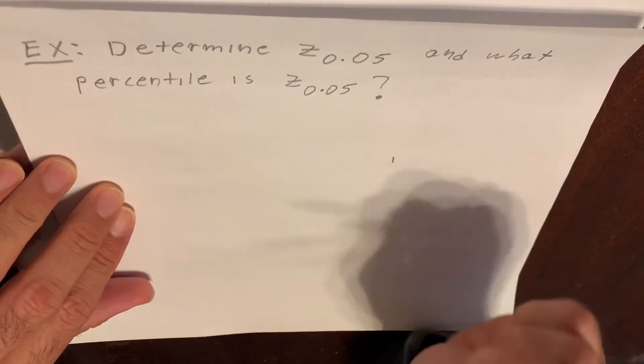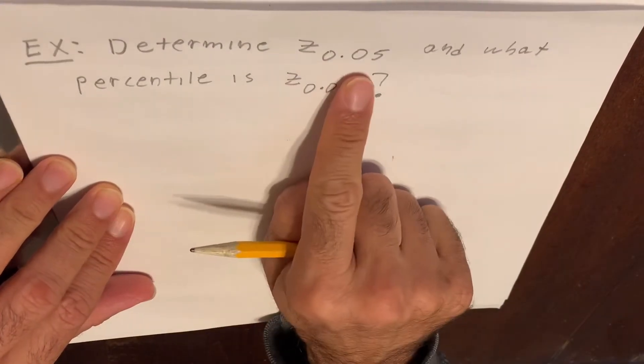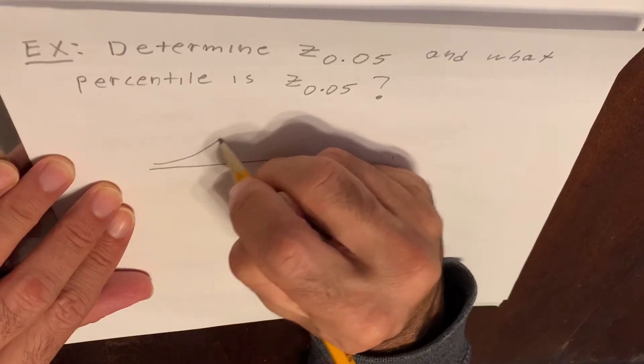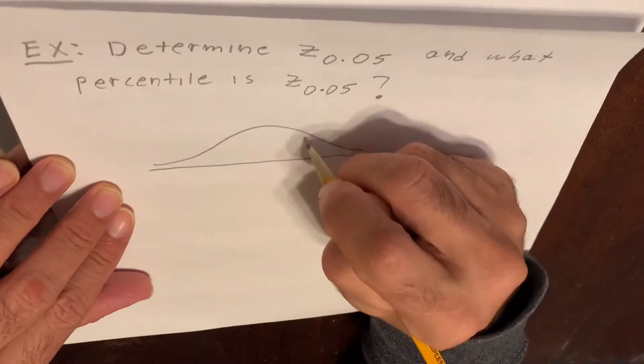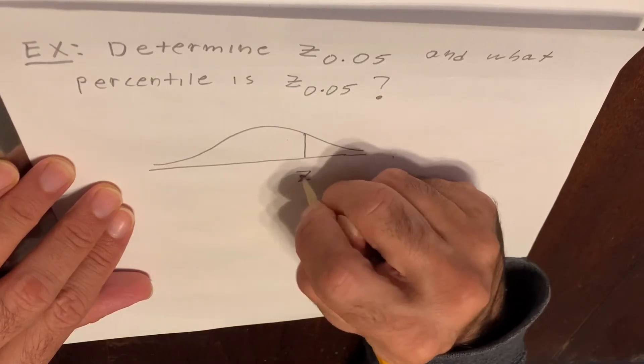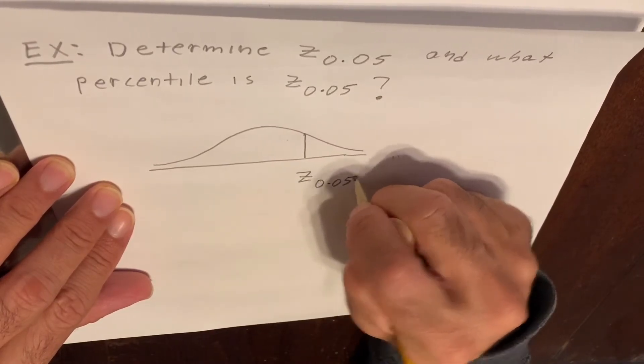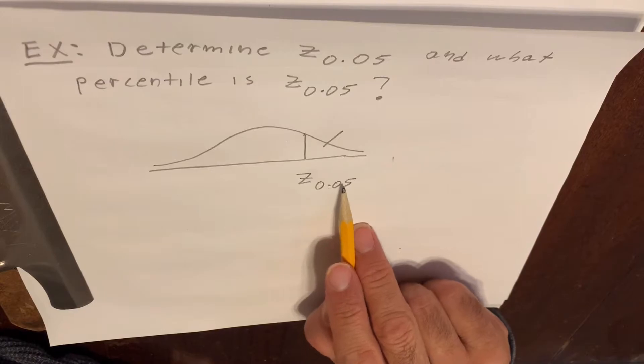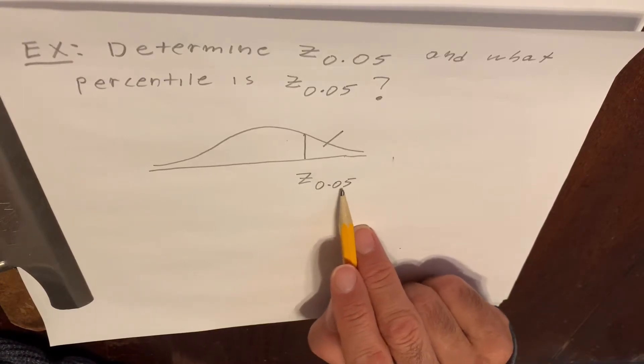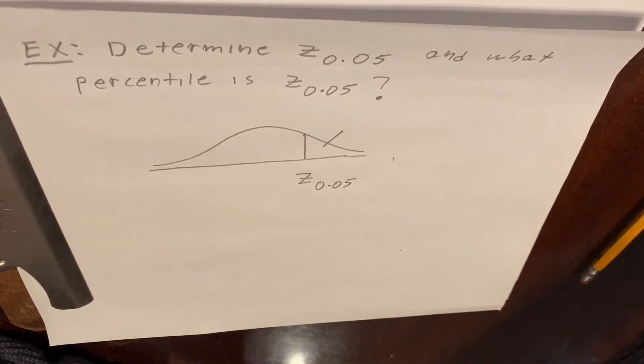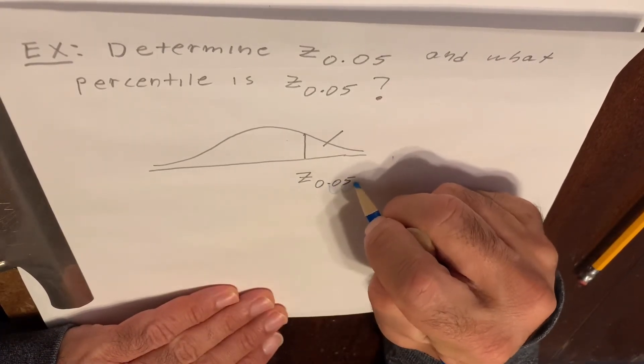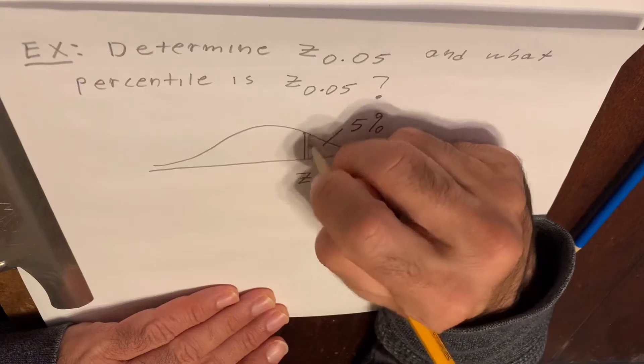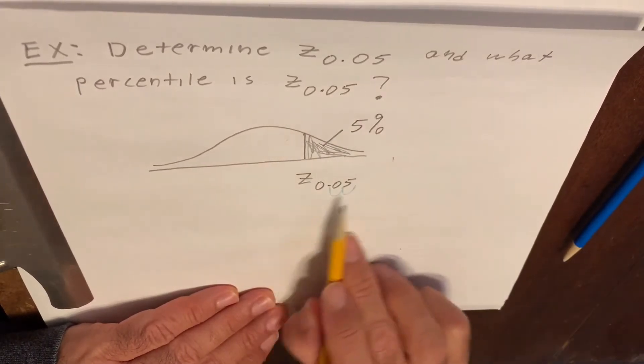Let's do one last example, and then I'll close this video. Suppose we want to determine Z sub 0.05. Let's draw a little picture of it first. If you convert 0.05 into a percentage, we multiply by 100, which is equivalent to moving the decimal point two places to the right. So this is exactly 5%. We have 5% of the area to the right of the Z score.